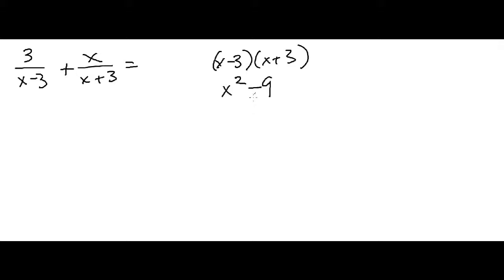I kind of skipped steps, but if you want to pause the video go for it — that's going to be the answer. You can multiply each term by the least common multiple, but in the end you're actually going to end up doing more work because you're going to have to cancel a bunch of stuff out.